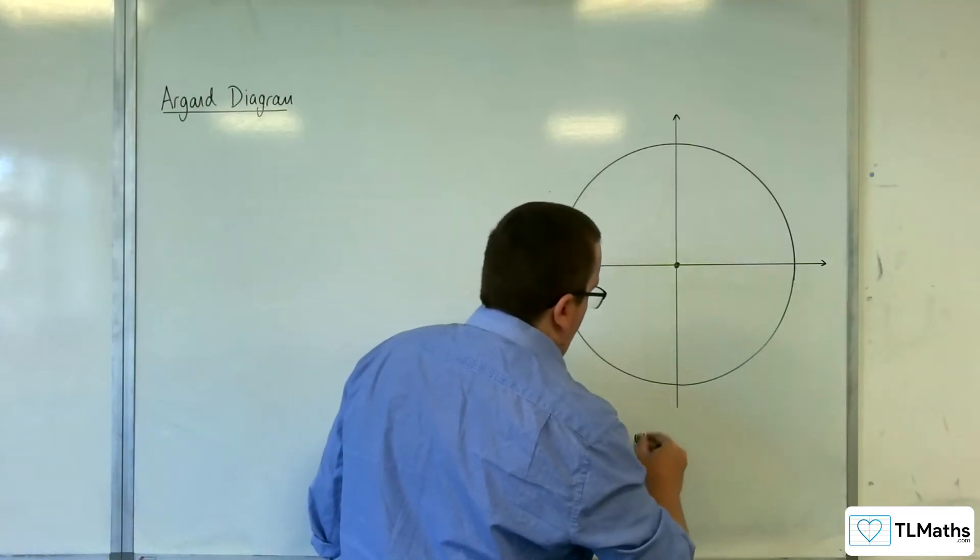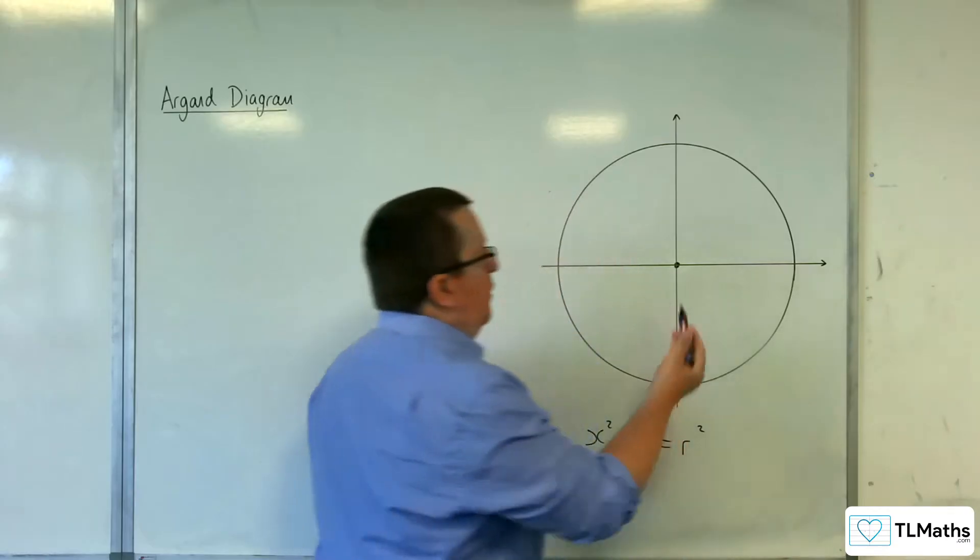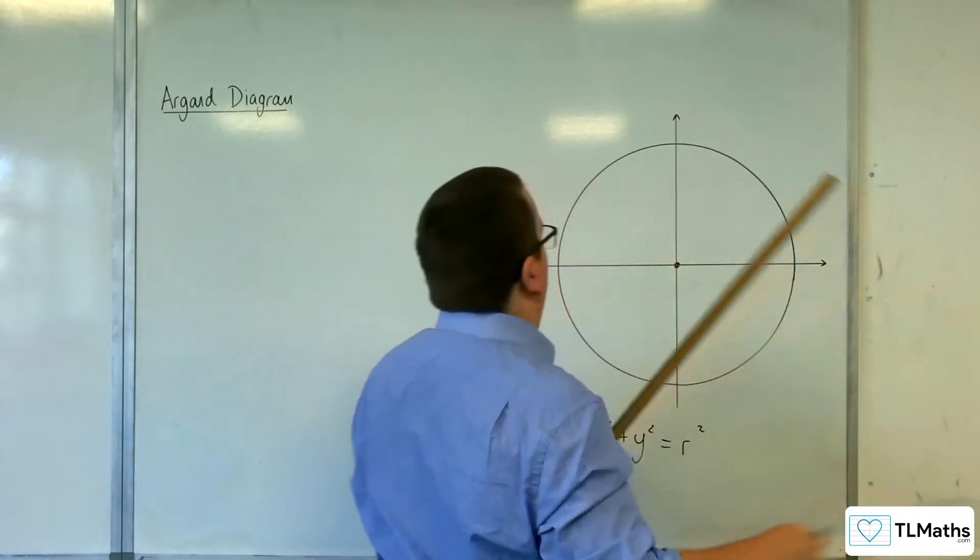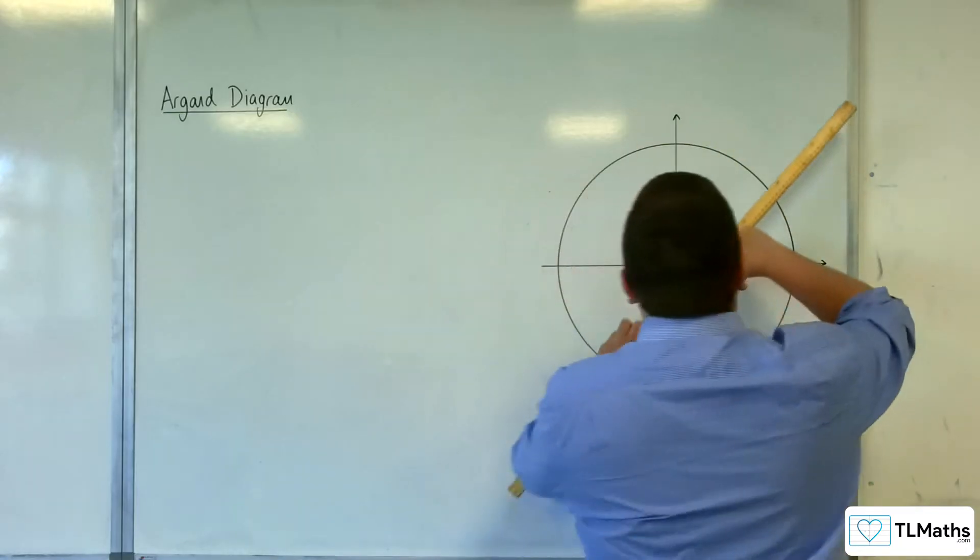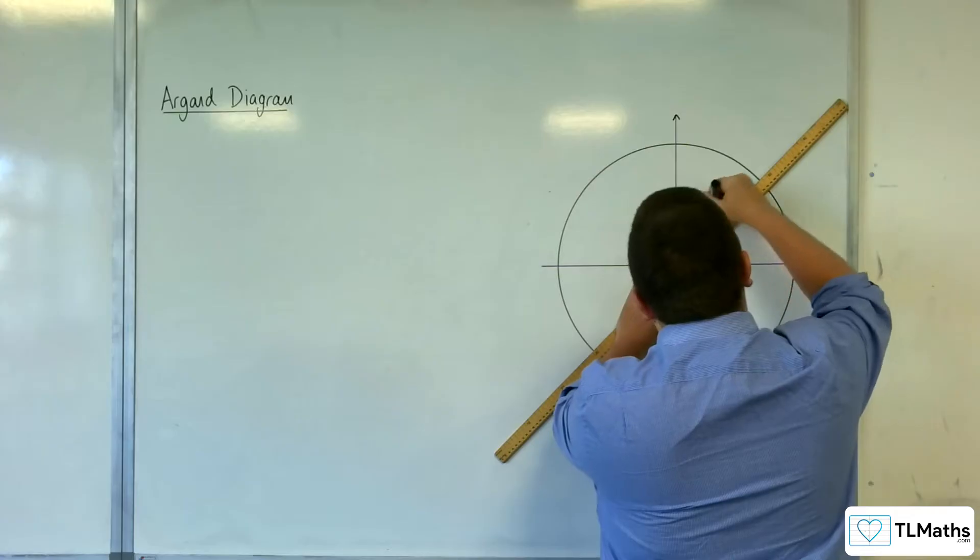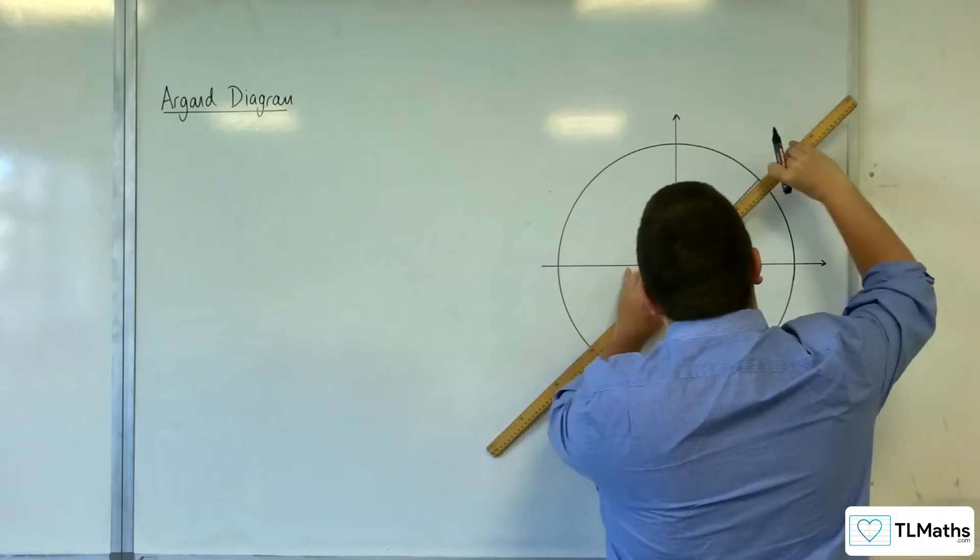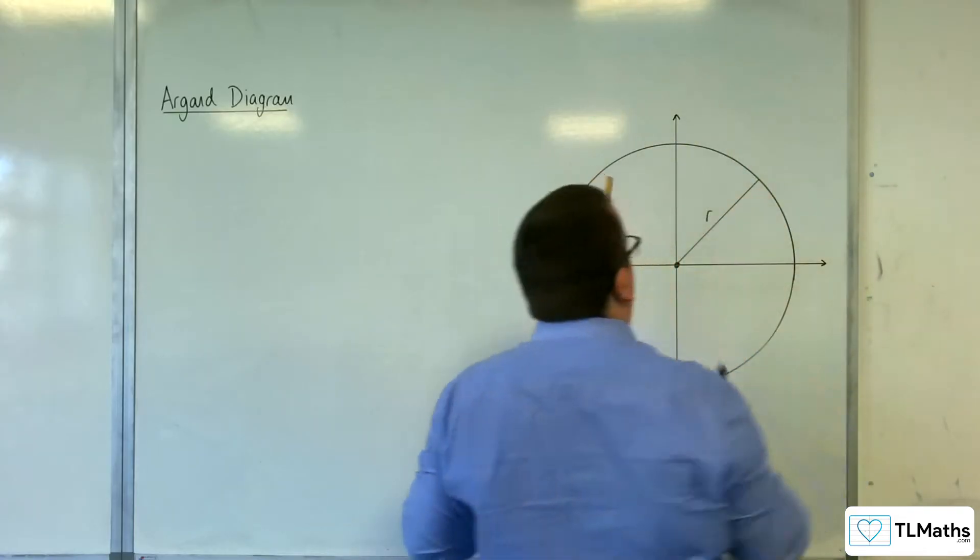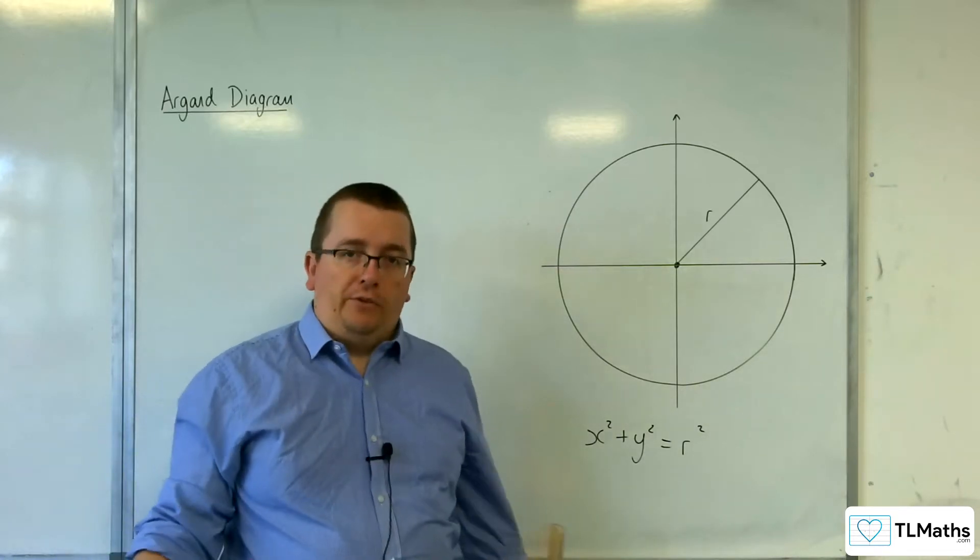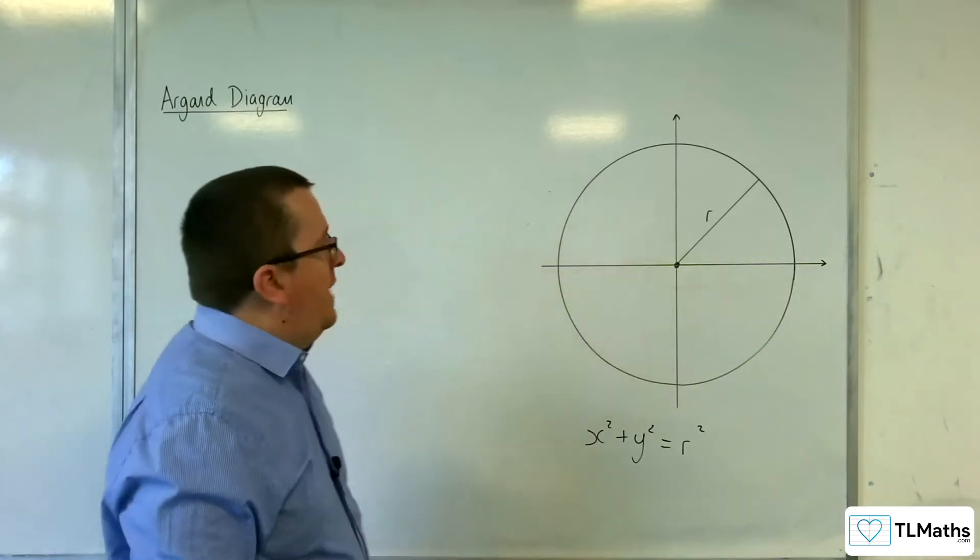So, if our radius is r, let's draw a bit on here. So, let's draw a radius. There we go. That's r. Then, the equation of this circle would be x squared plus y squared equals r squared. So, we should have seen that before.